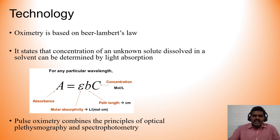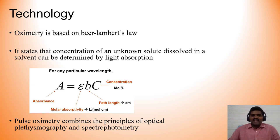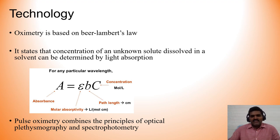Regarding the technology used in recording pulse oximetry: oximetry is based on Beer-Lambert's Law, which states that the concentration of an unknown solute dissolved in a solvent can be determined by the characteristics of its light absorption. This is given by the equation: for any particular wavelength, absorbance (A) equals molar absorptivity (ε, a constant given in liters per mole-centimeter) multiplied by the path length (b, in centimeters) — the distance light must traverse — multiplied by the concentration of the substance in moles per liter.